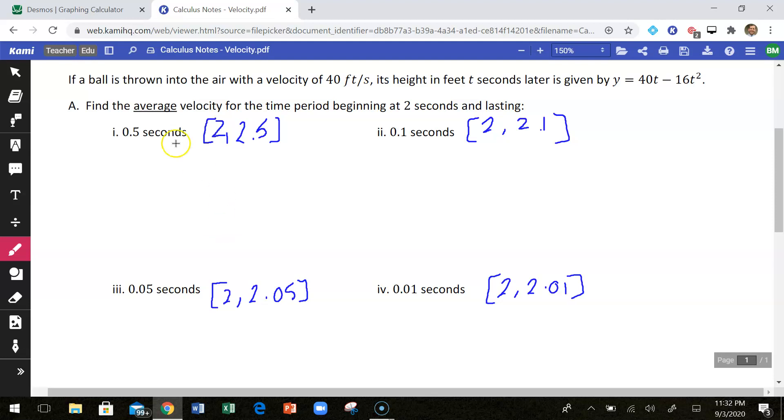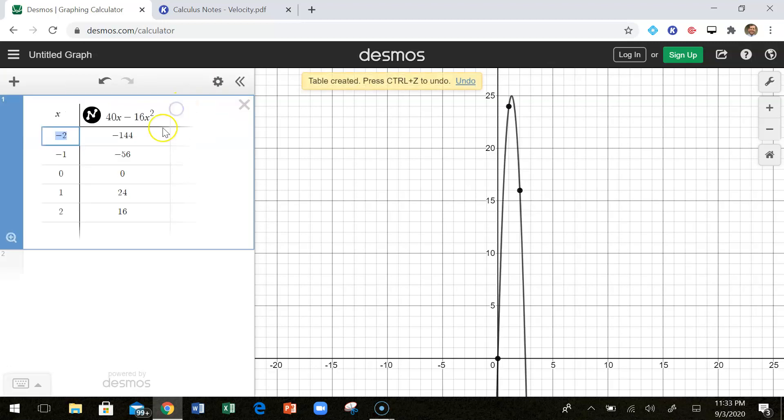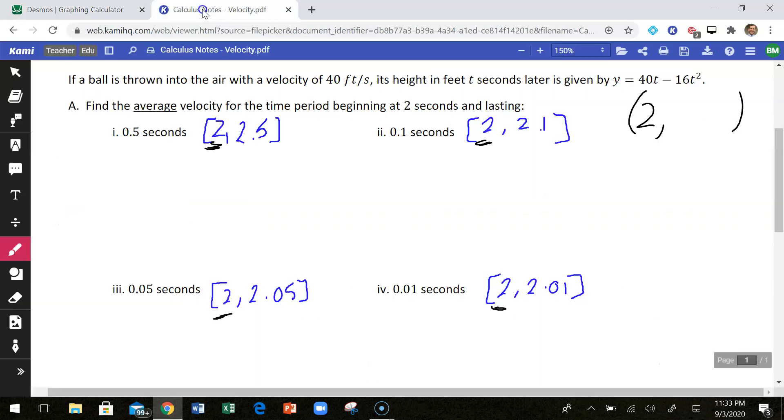I'm going to use Desmos to help me out here a little bit. What we're going to do every time is we're going to find slopes. And every single time, one of our points is going to be when x is 2. So we're going to always be looking at when x is 2, what is y? So I have already graphed this equation, y equals 40x minus 16x squared. I'm going to pull up a table here. And when x is 2, the y is 16.